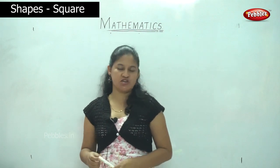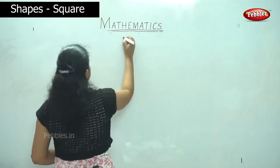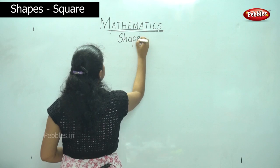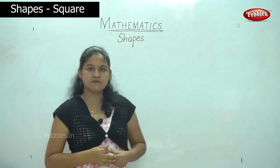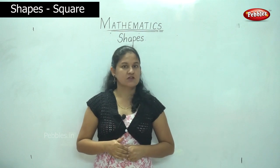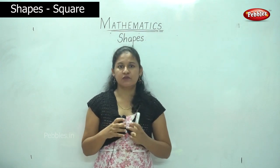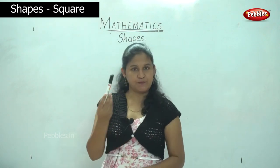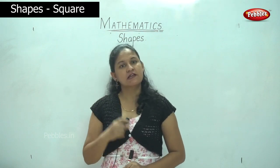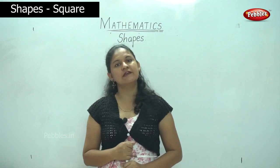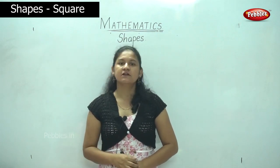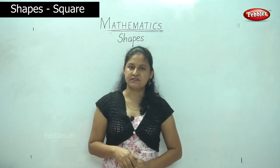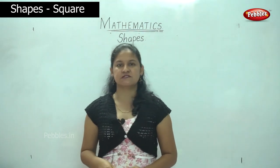Our next topic will be shapes. We see shapes all around us. We have shapes — we buy things according to their shape. The box that we use, the pen that you use, the pencil that you use, the eraser that you use — all are of different shapes. The shape of your TV, the shape of the wheels of your cycle — all these are shapes. So today we are going to see shapes.